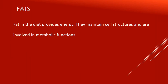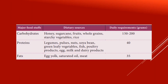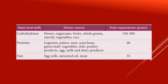Essential amino acids are those that cannot be biosynthesized by the body and must be obtained from the diet only. So we should take essential amino acids from diet only. Look at the table — it has three columns: major foodstuffs, dietary source, and daily requirements for the human body.